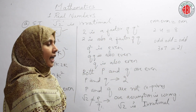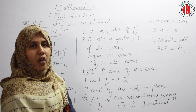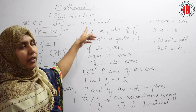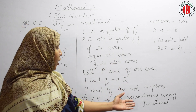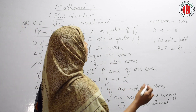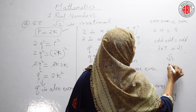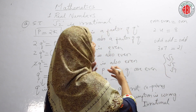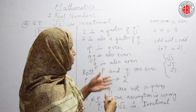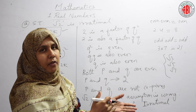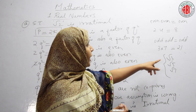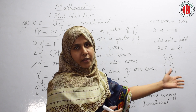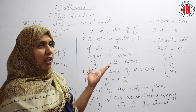Our assumption that √2 is rational is wrong. Therefore, √2 cannot be written in the form P/Q, and so √2 is irrational. Similarly, you can prove root 3, root 5, root 7 are irrational using the same steps — just replace 2 with 3, 5, or 7 respectively.